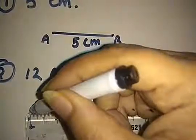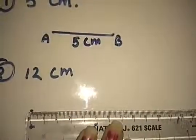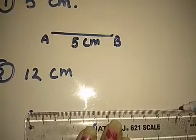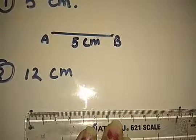See, from 0 we start. It is 0 and they are asking about 12 cm. So where is the 12? See here, it is 12. So here I will also put one dot.